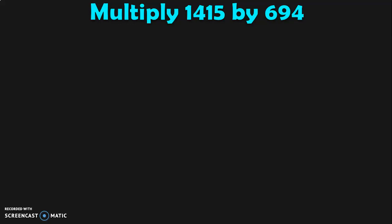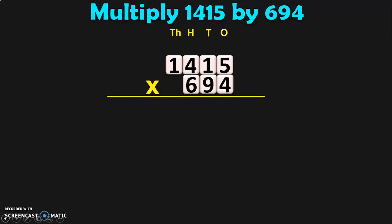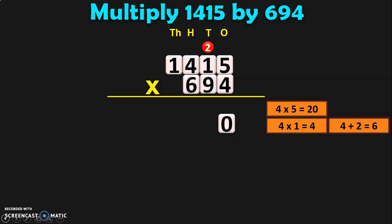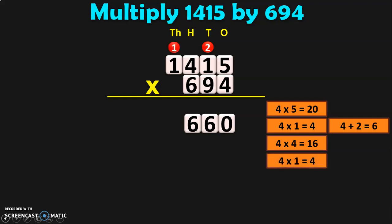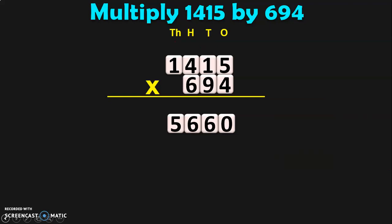The next sum is to multiply 1415 by 694. As usual, write down the number and its place values and multiply it by 694. Begin the multiplication from the 1s place. 4 fives are 20 — 0, carry over 2. 4 ones are 4. 4 plus 2 is 6 — write 6 in the 10s place. Next, 4 fours are 16 — 6 will be in the 100s place and 1 will be carried over to the 1000s place. 4 into 1 is 4, plus 1 is 5. So you get 5660 when you multiply 1415 by 4.